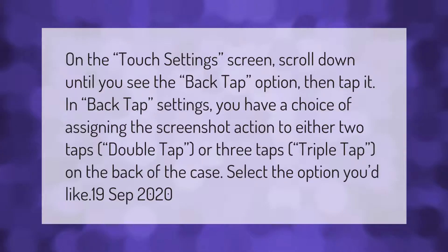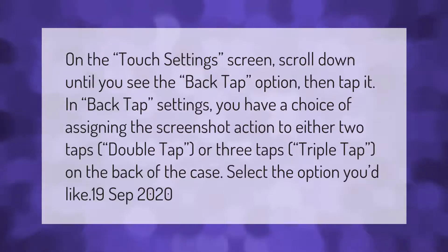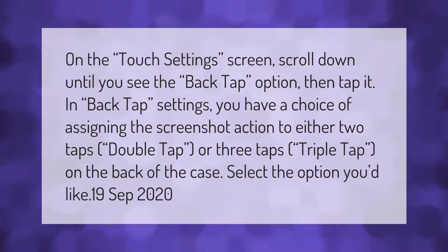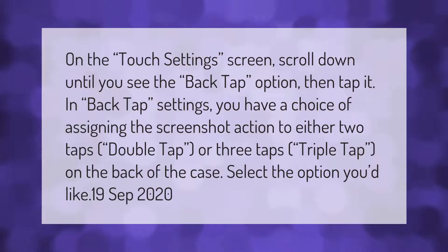On the touch settings screen, scroll down until you see the back tap option, then tap it. In back tap settings, you have a choice of assigning the screenshot action to either two taps (double tap) or three taps (triple tap) on the back of the case. Select the option you'd like.